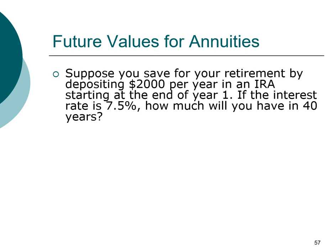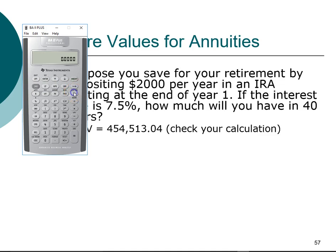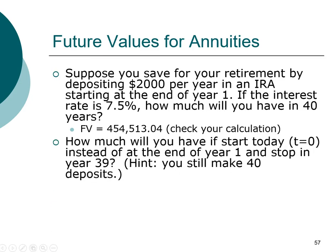This practice problem uses annual deposits with annual compounding: how much would you have in your IRA account after 40 years? The answer is $455,513. Using second function Clear TVM: PMT = $2,000, N = 40 years, I/Y = 7.5%. Compute the future value — you get $455,513.